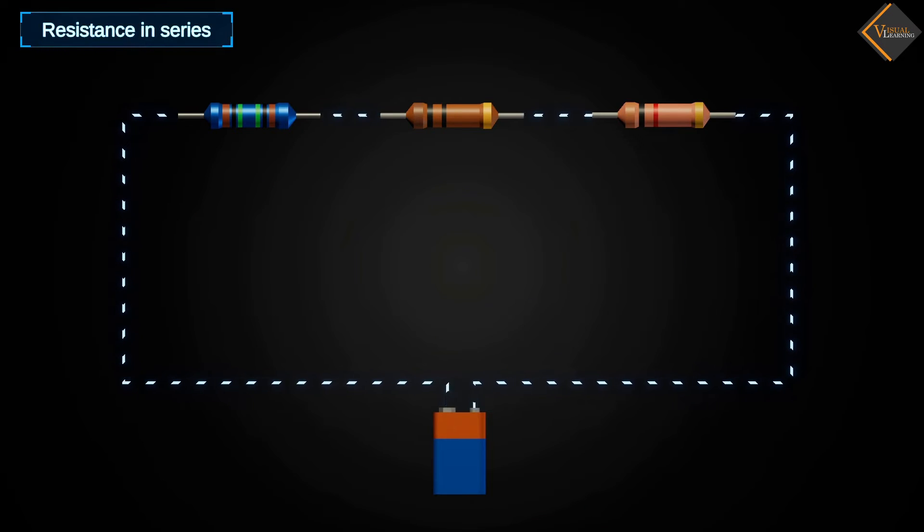Resistance in series. In the animation, we see that three resistors are connected end-to-end, which we call a series connection. These three resistors are labeled as R1, R2, and R3.